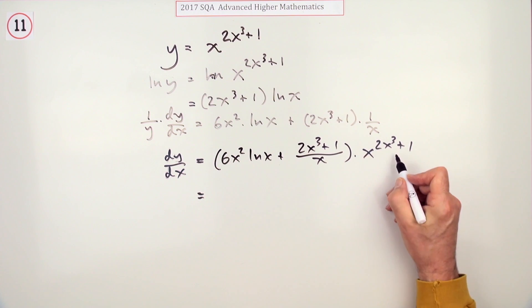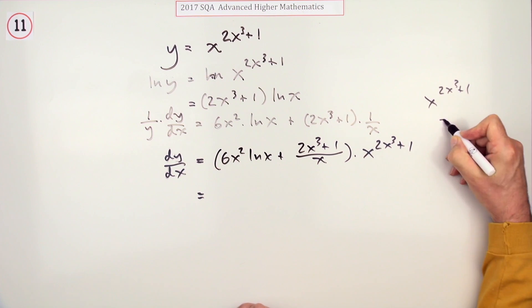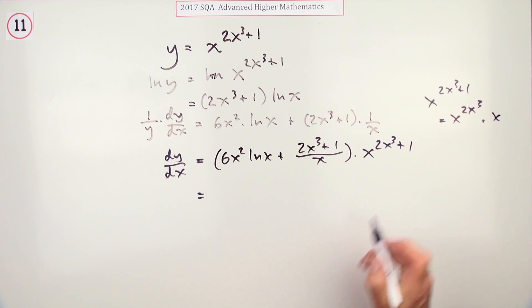y is equal to this, so that's x to the power 2x cubed plus 1. Yes, another equals because there's something I can do with that now. I can use that business: x to the 2x cubed plus 1 is the same as x to the 2x cubed times an x.